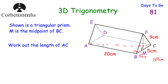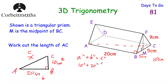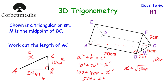Considering the base rectangle ABCD, cutting diagonally gives a right angle triangle. Looking down on it, AB is 20 centimetres and BC is 10 centimetres, and we want to find AC, the hypotenuse. Using Pythagoras: 10 squared plus 20 squared equals X squared, giving 100 plus 400 equals 500 equals X squared. The square root of 500 equals 10 root 5, or 22.3606... centimetres. So AC is 22.36 centimetres to two decimal places.